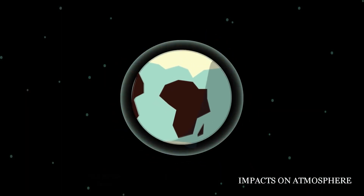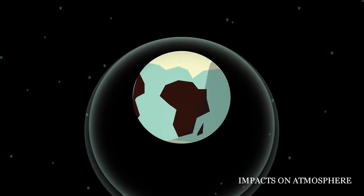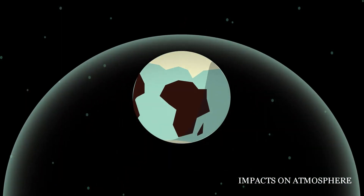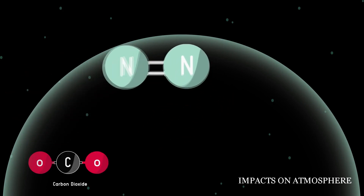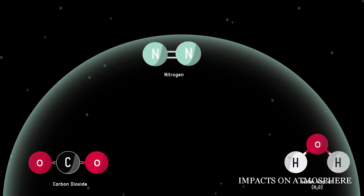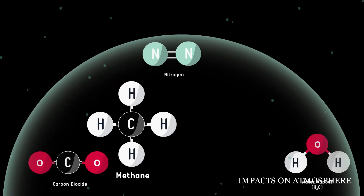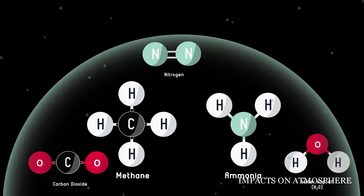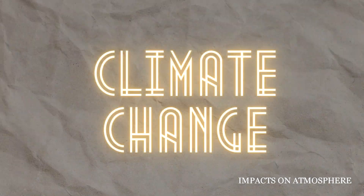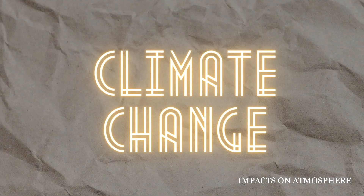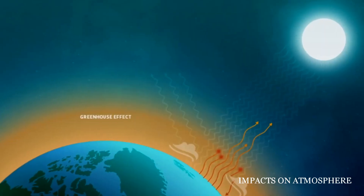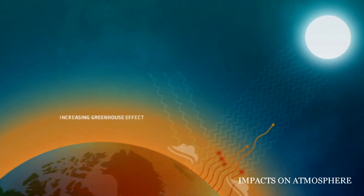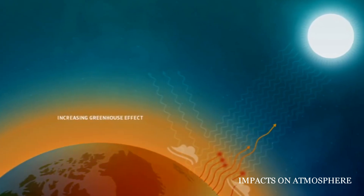Urban air pollution can also change the chemical composition of the atmosphere by releasing pollutants that react with other substances in the air. This can lead to the formation of new compounds, which can have negative impacts on human health and the environment. It can also contribute to climate change by increasing greenhouse gases such as carbon dioxide in the atmosphere.